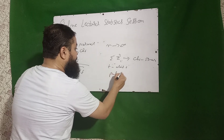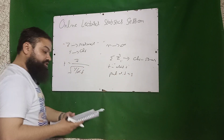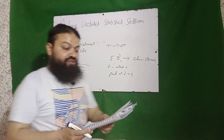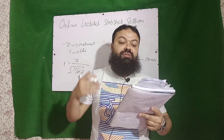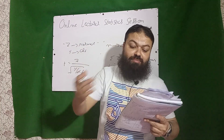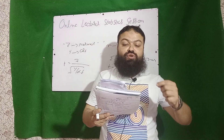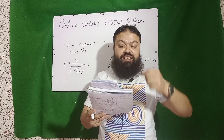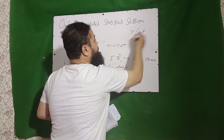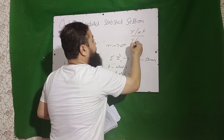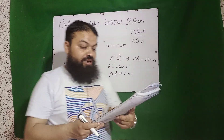In t distribution, if we put degree of freedom equal to 1 it becomes Cauchy distribution. When degree of freedom approaches infinity, t distribution follows standard normal distribution. If X follows chi-square and Y also follows chi-square, then (X divided by its df) over (Y divided by its df) will be F distribution.